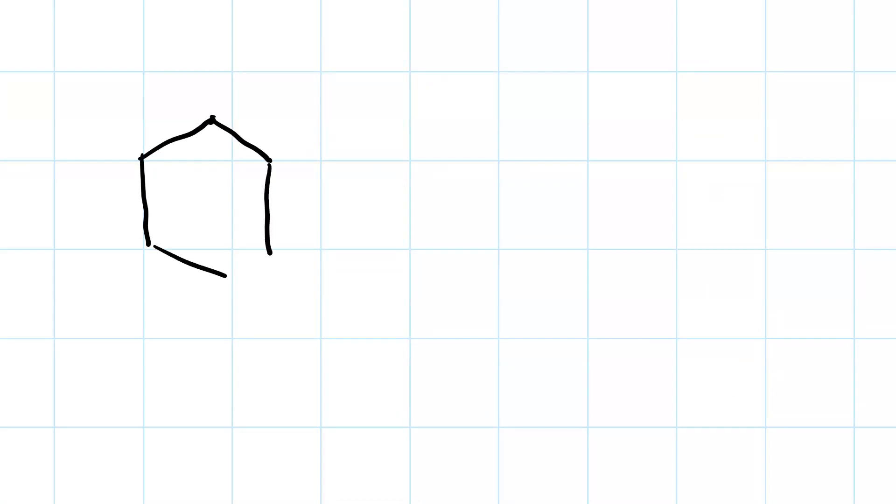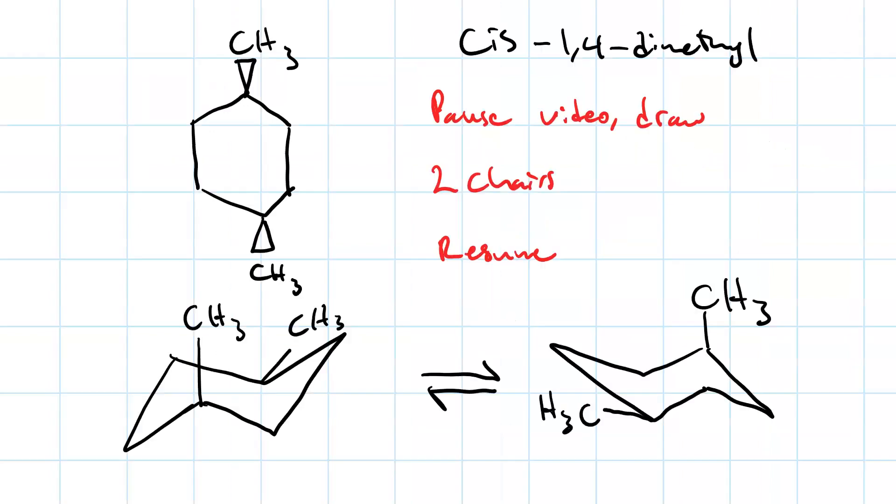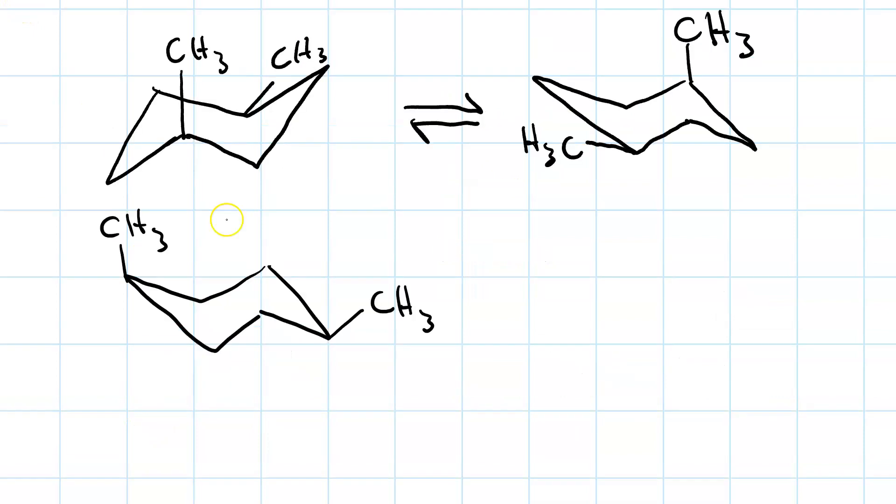So, that was trans-1,4-dimethyl cyclohexane. What about cis? Can you draw two chairs for that? So, there's one way to draw my two chairs. If I change my point of view a little bit, I'm going to put one methyl on the right-most and the other on the left-most. So, there we've shifted our point of view. Those two are the same.